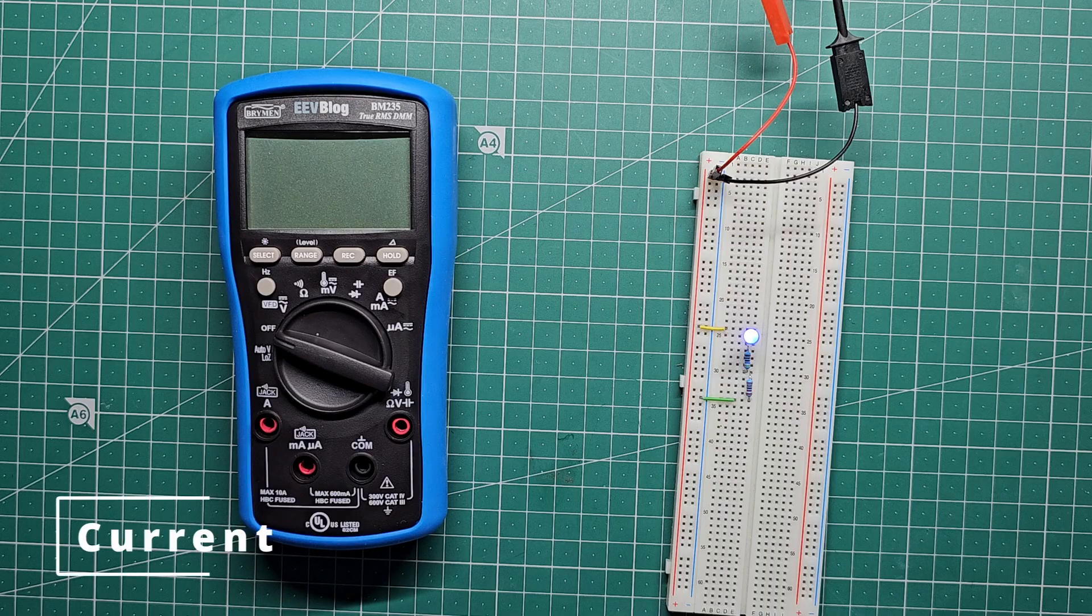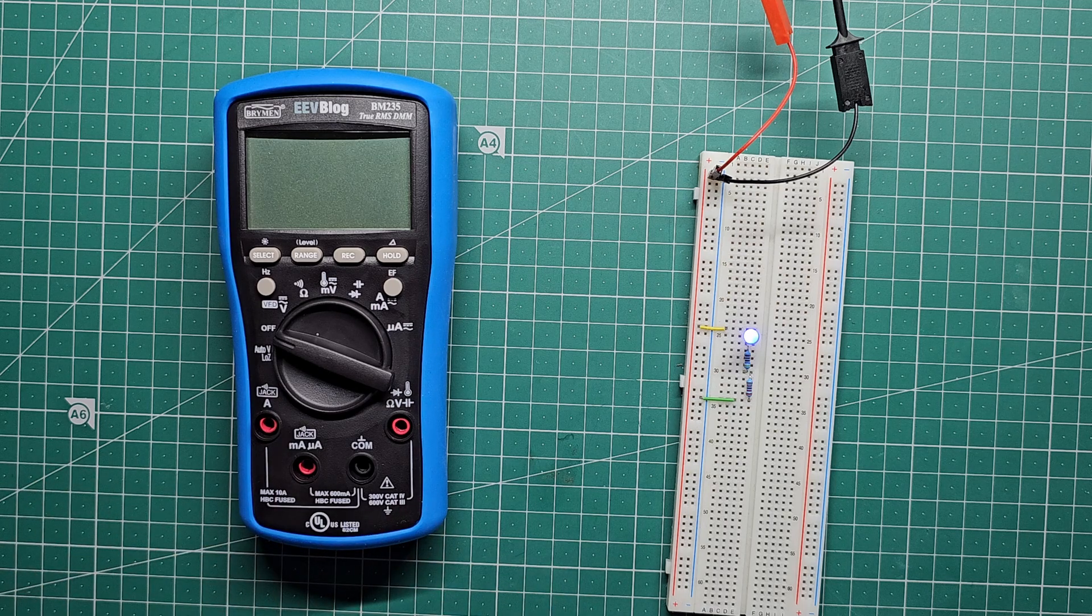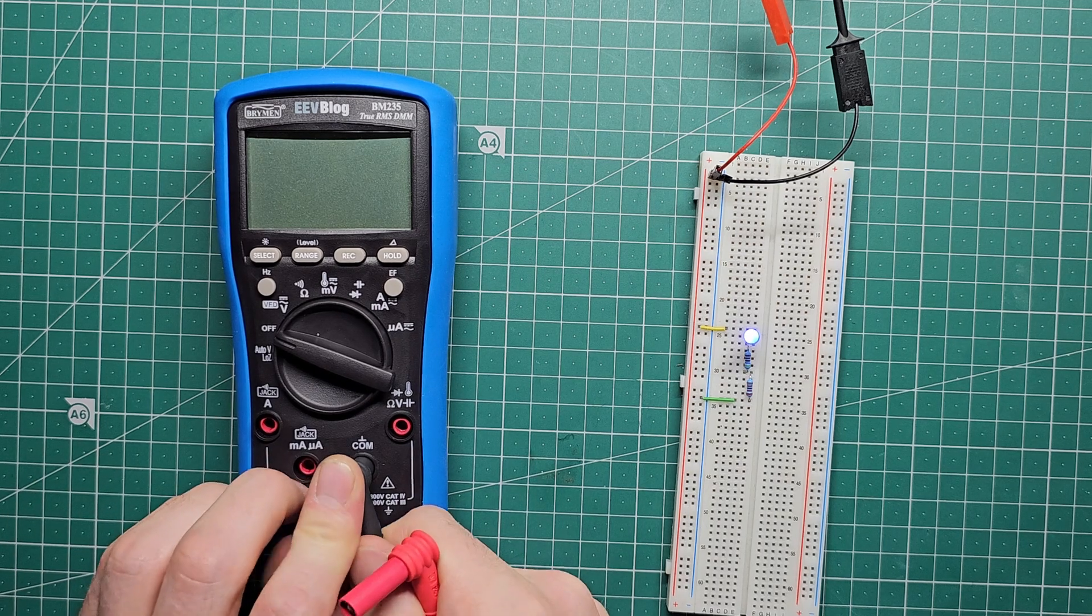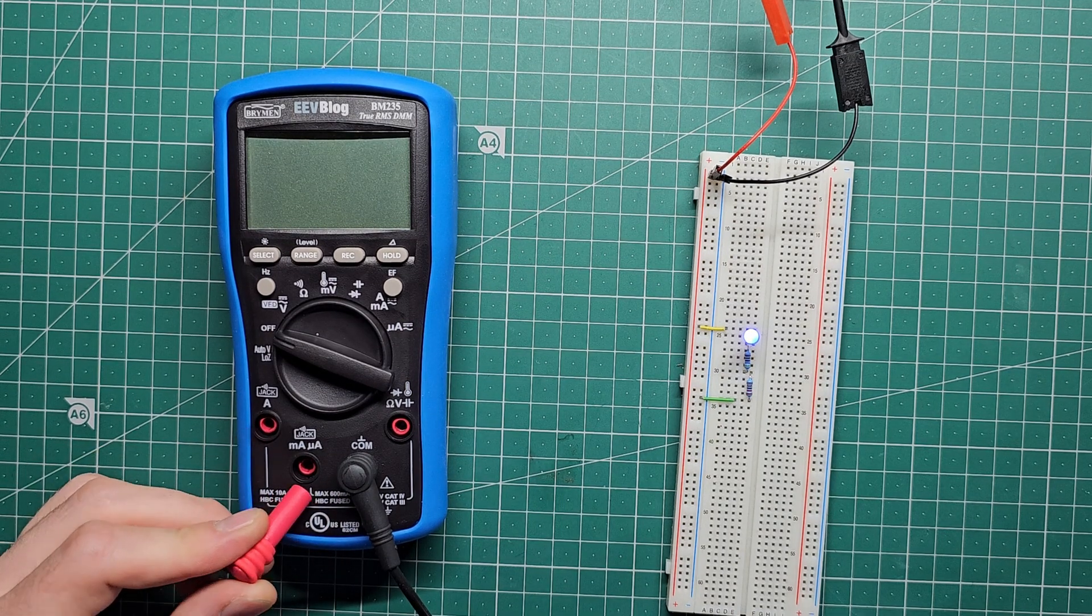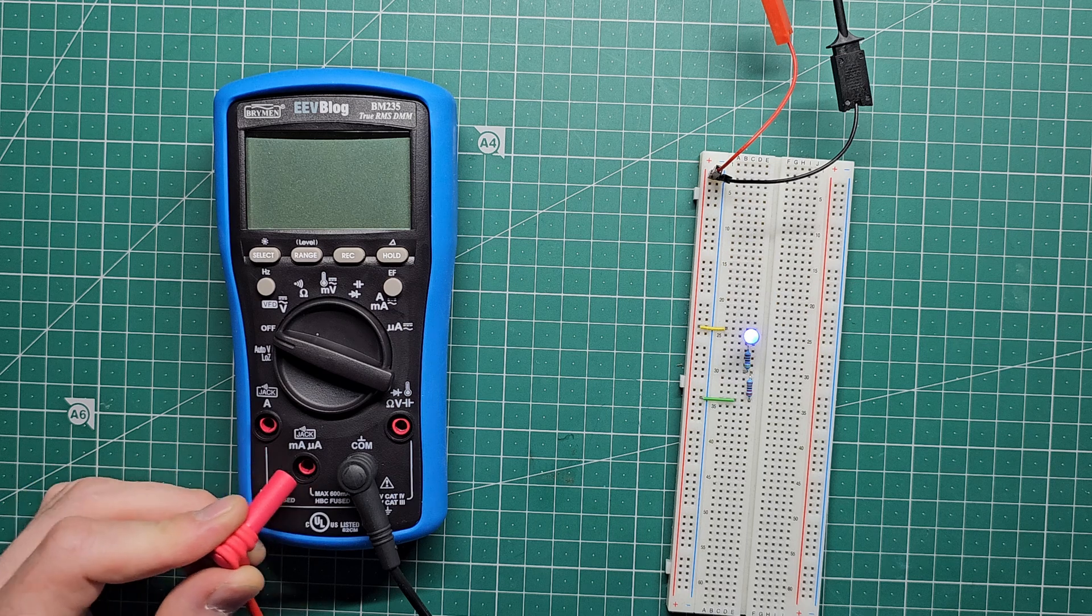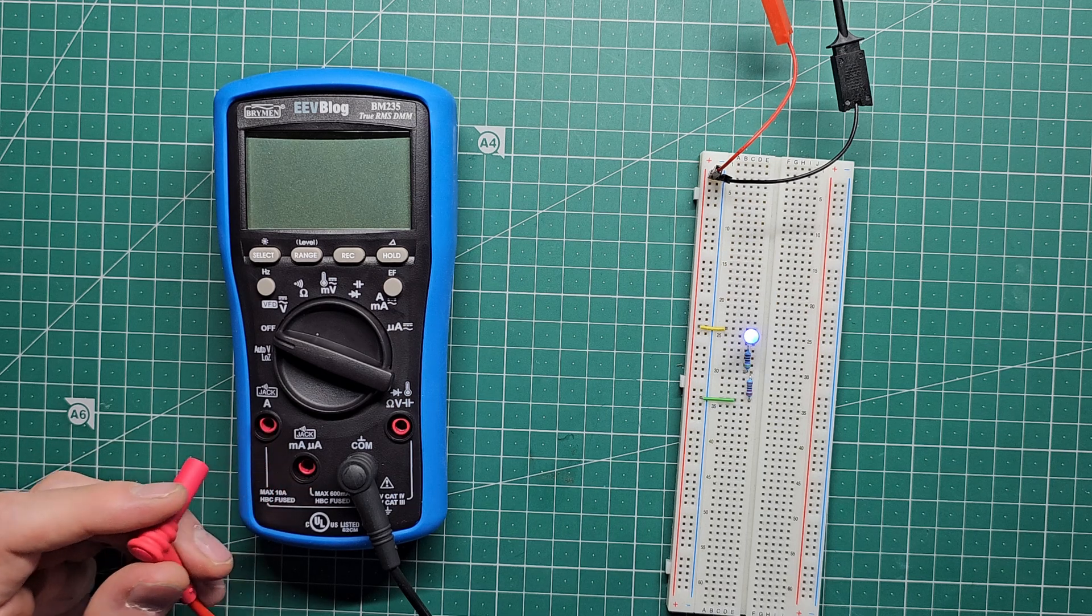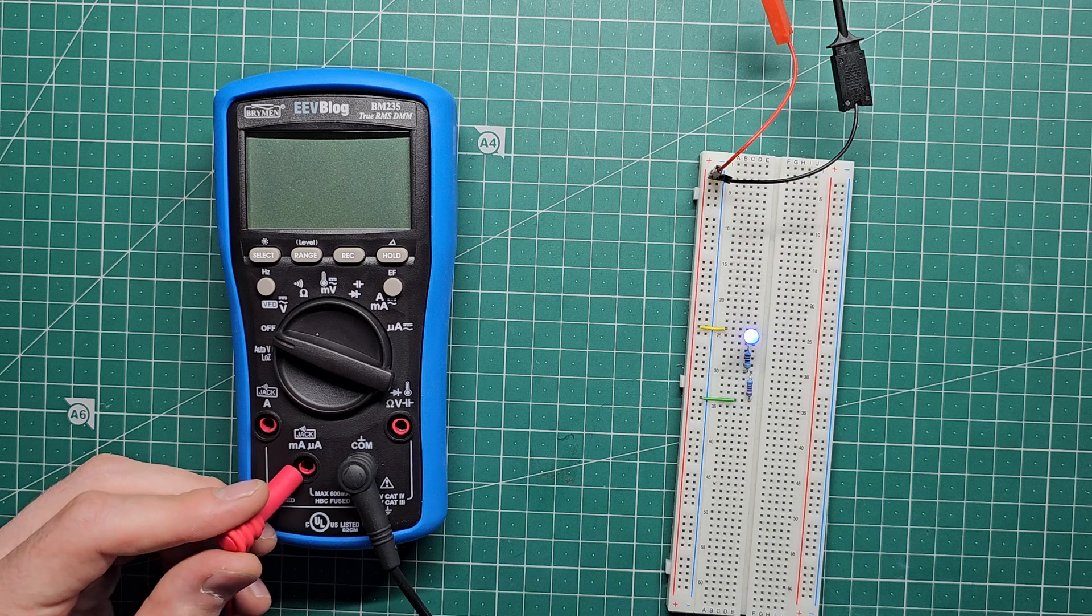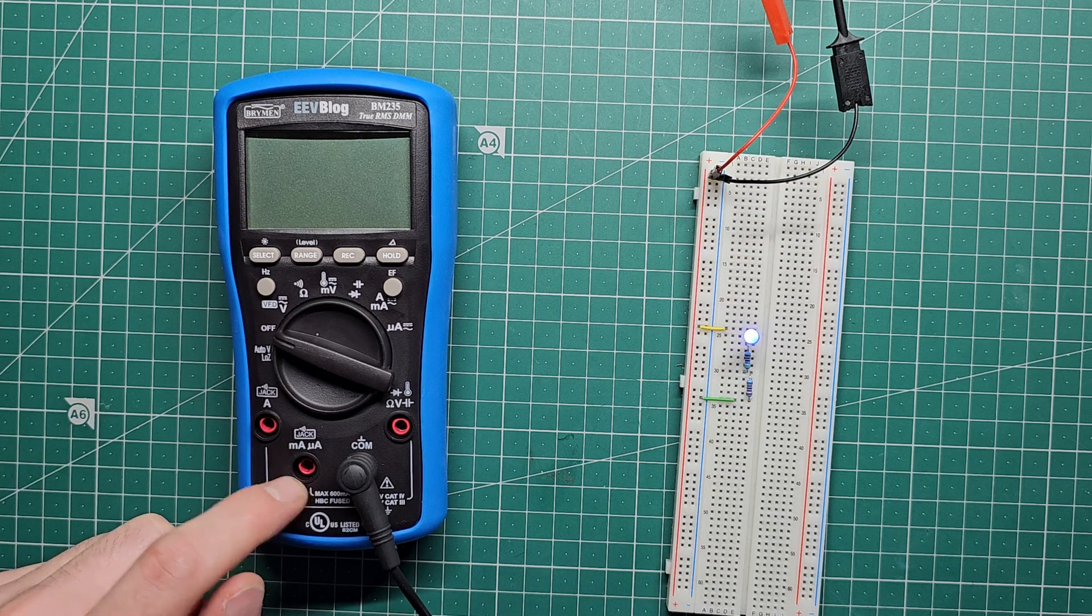Now let's look at measuring current in the circuit. This is different to voltage in that we need to use a different port. So firstly we'll keep the common port the same, but now we put the red connector in either the amp port or the milliamp microamp port. Both of these will work for measuring current, but they're designed for different current values. So if you're working with higher current, use the amp port, but if you're working with lower current, use the milliamp or microamp port.